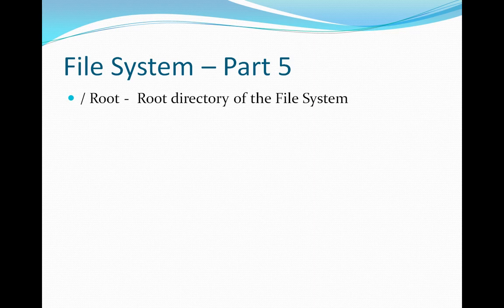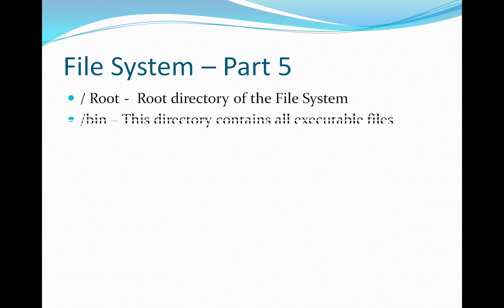The root directory is the starting point of the file system. Then we have /bin — this directory contains all executable commands. Each directory has a specific meaning, and these are the basic, important file system directories that are created once the UNIX operating system is installed.